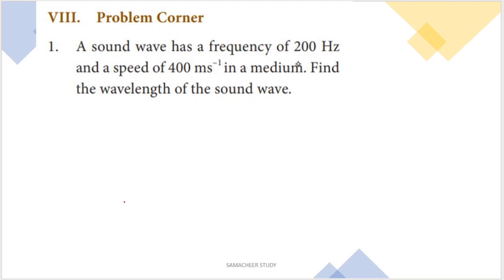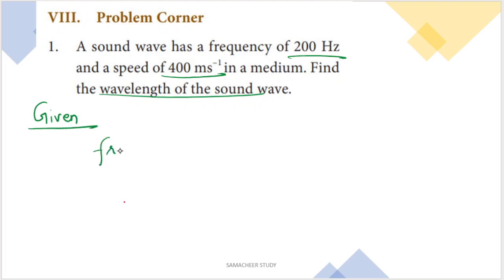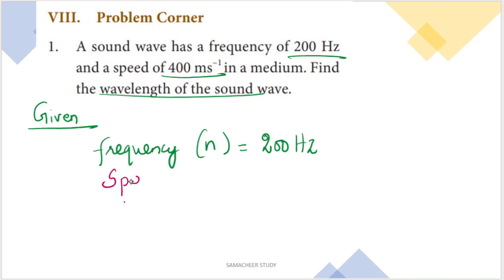First question: A sound wave has a frequency of 200 hertz and a speed of 400 meters per second in a medium. We need to calculate the wavelength of the sound wave. Given: frequency n = 200 hertz, speed v = 400 ms⁻¹.